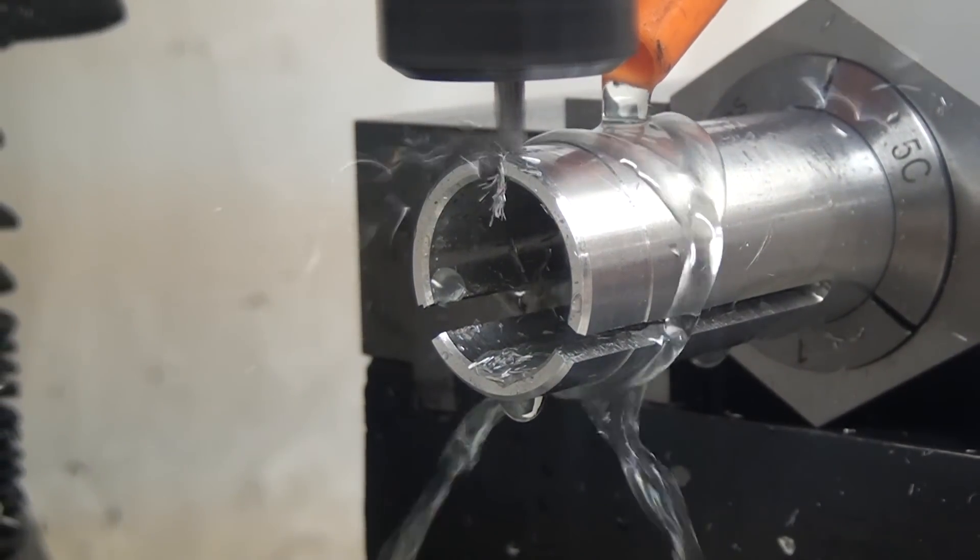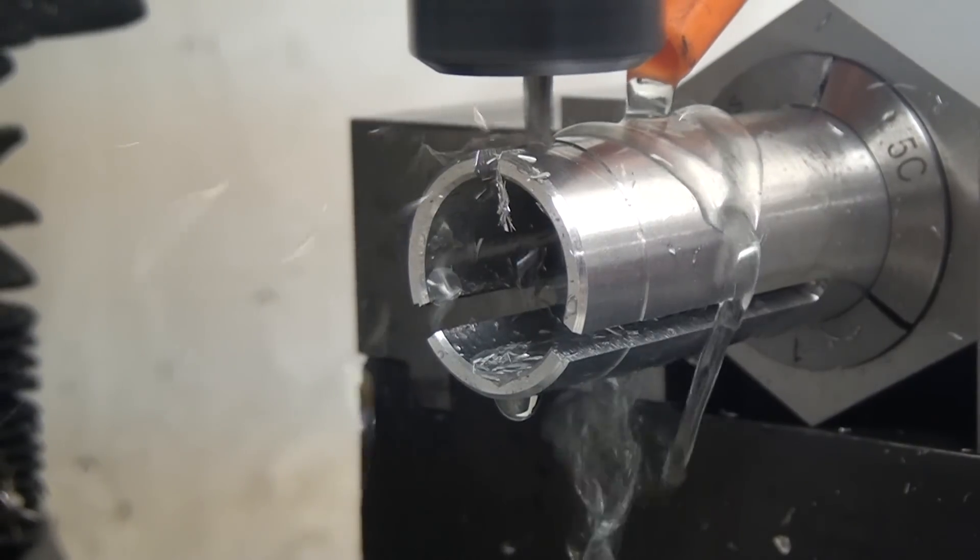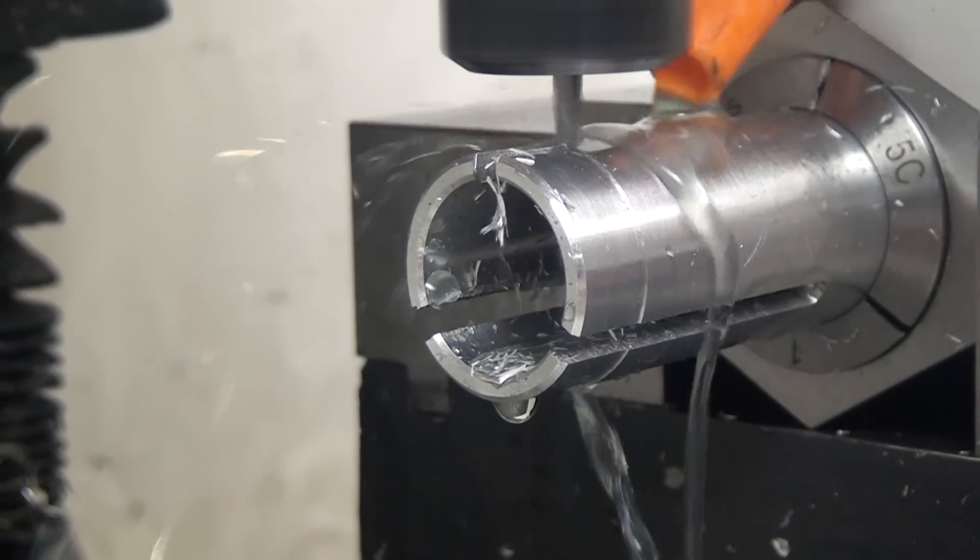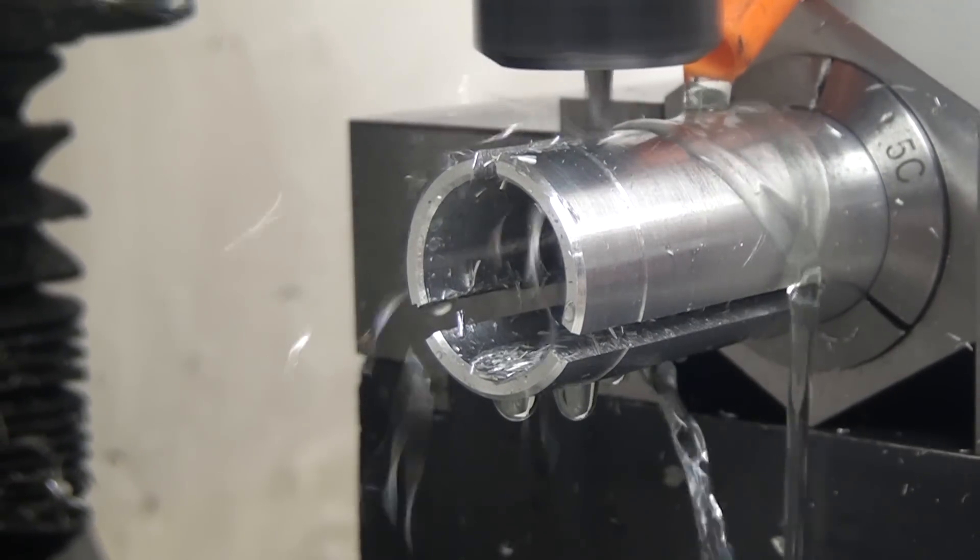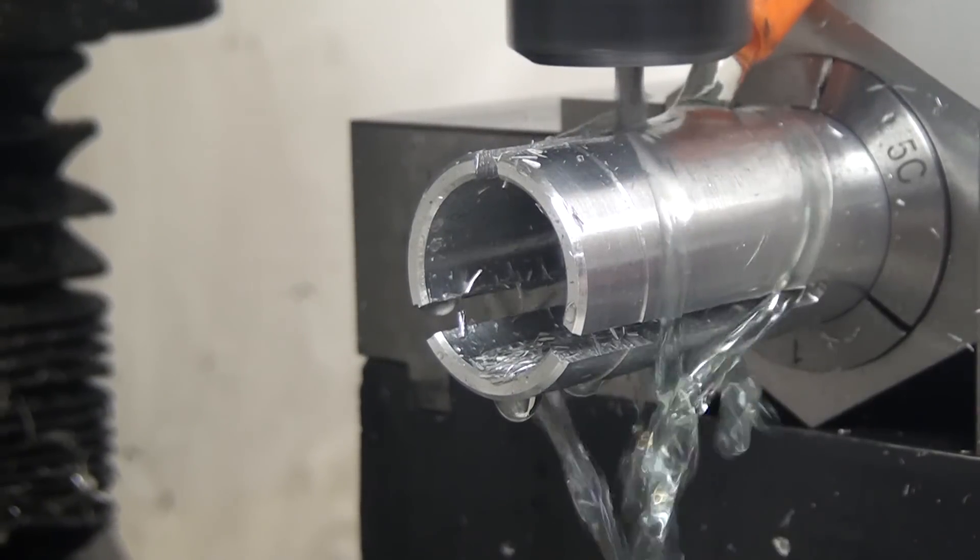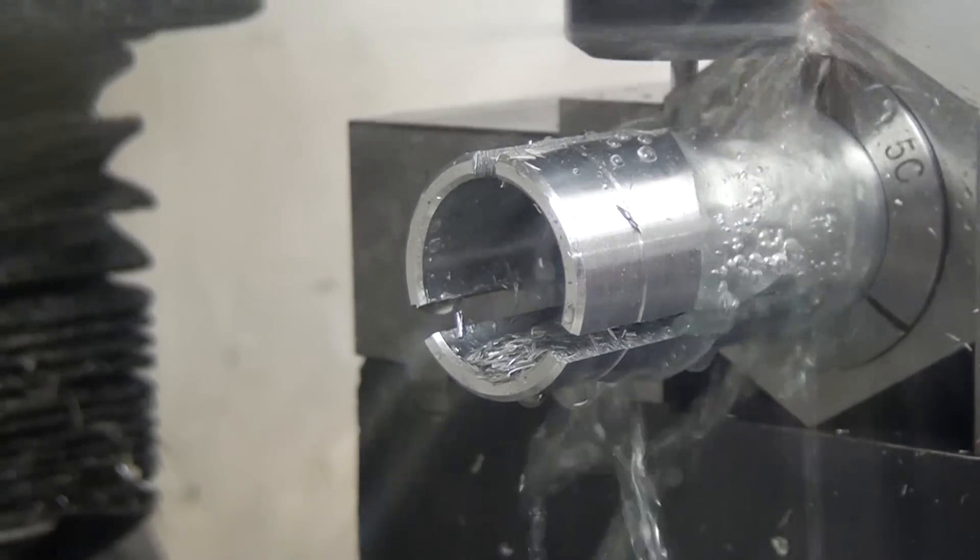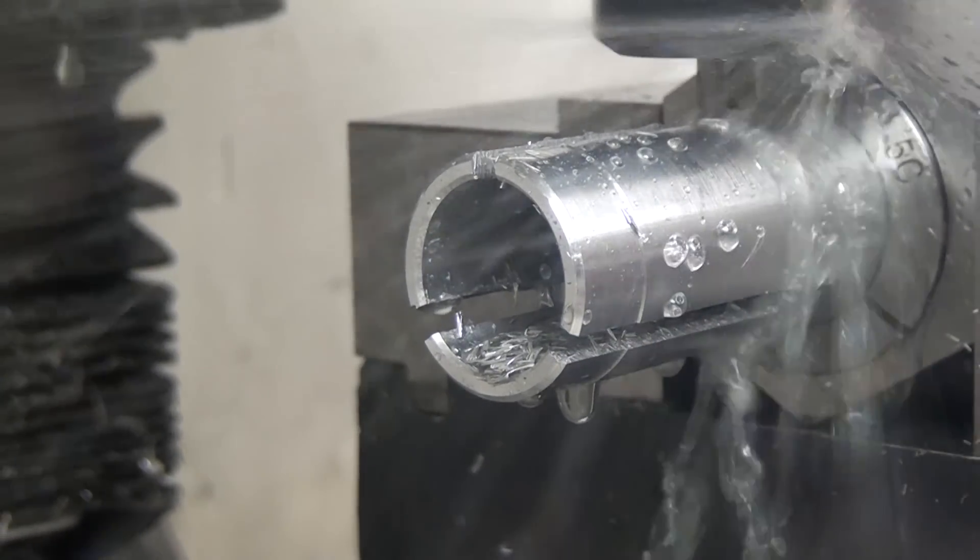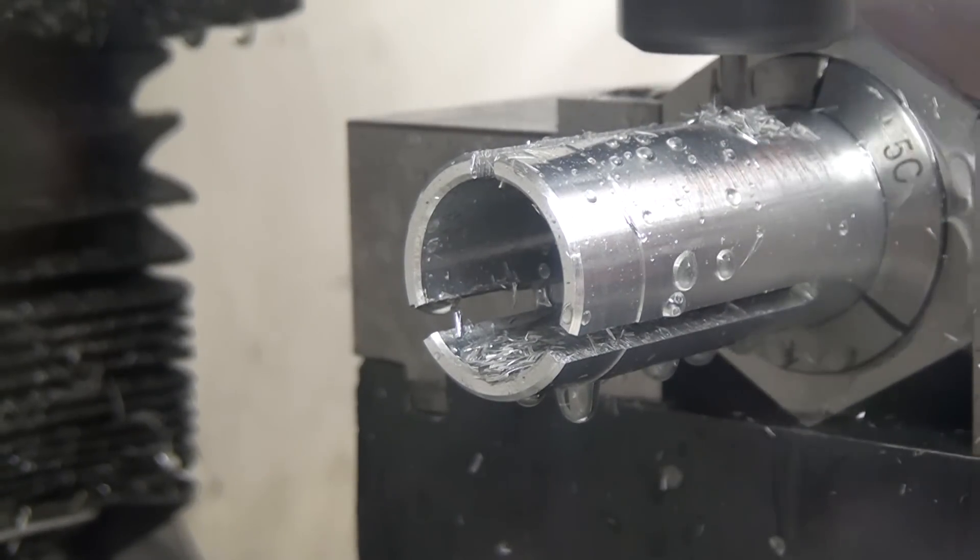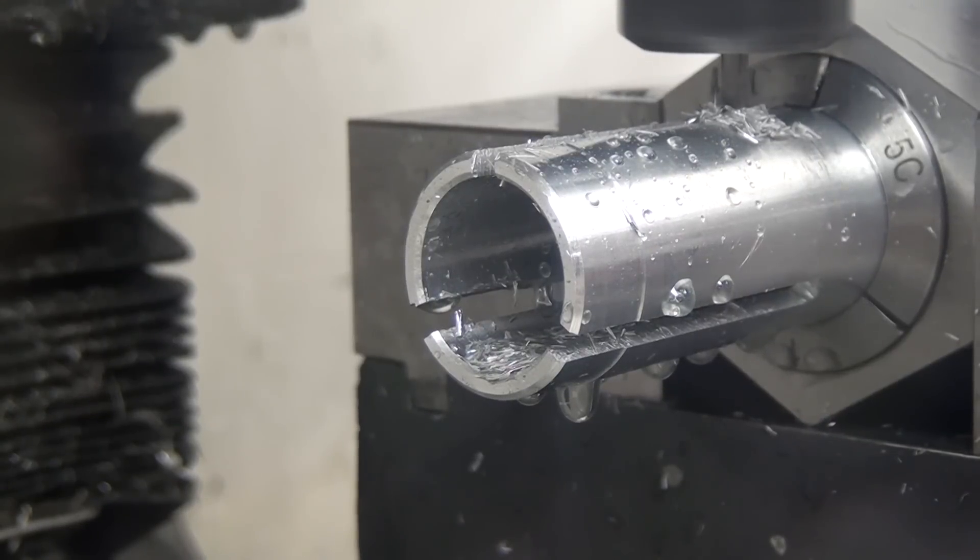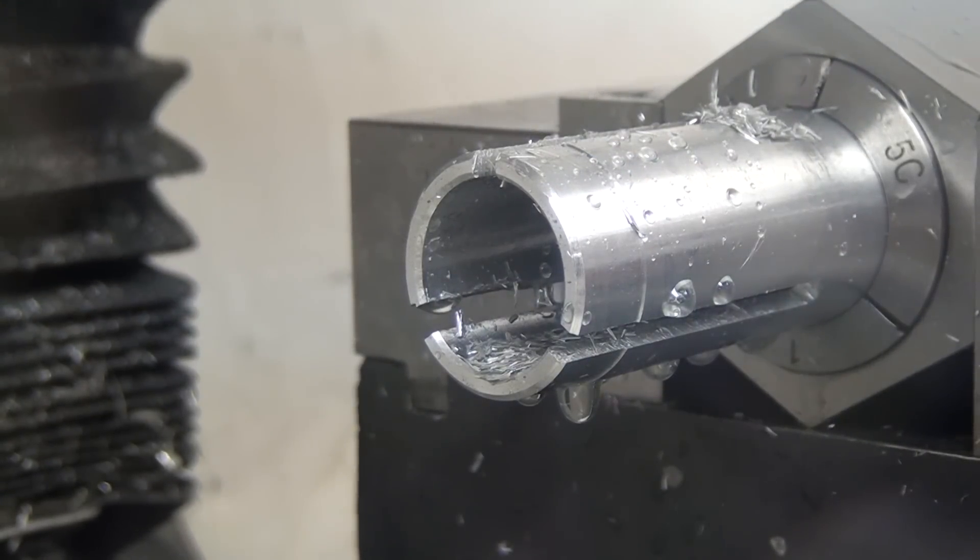Then using my 5C collet block over on the mill, I machined three grooves into it to be used on my 5C collet chuck. If you're going to do this on a four jaw chuck, then of course you'll want to machine four slots in it. But either way works. My collet chuck runs pretty dang true, and so that's why I didn't decide to use the four jaw.